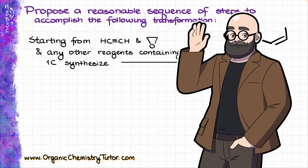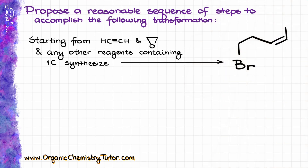Hello everyone, Victor is here, your organic chemistry tutor, and today I have another synthesis that has been proposed by one of my subscribers. We need to synthesize a big and complicated molecule starting from acetylene and epoxide as our two main sources of carbons, and of course we can also use any one-carbon sources that we want to incorporate in our molecule.